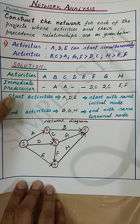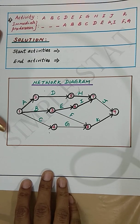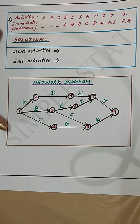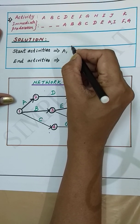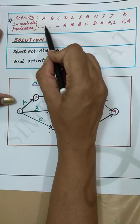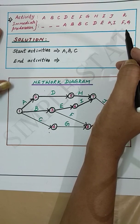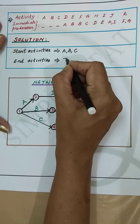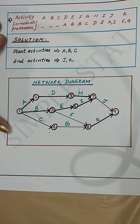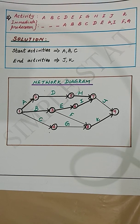Let's now proceed with the second problem. The start activities are A, B, and C — they start with the same initial node. The end activities are J and K, and they end with the same terminal node. Now draw the network diagram following the procedure used in the first problem and then number the events.